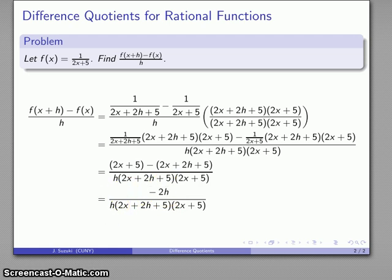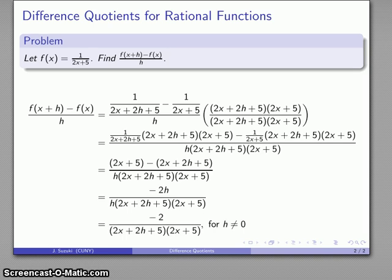And again, the key qualifier we should add here is we can cancel those h's out as long as h itself is not equal to 0. So we'll do the cancellation but then we'll throw in some fine print that says h can't be equal to 0. And there is our difference quotient.